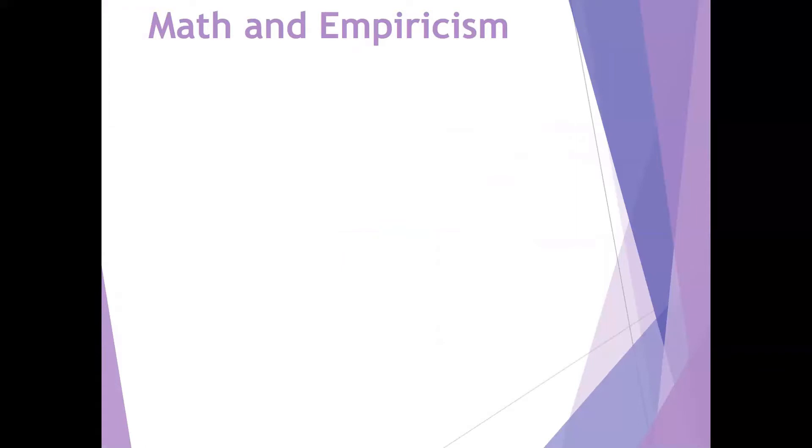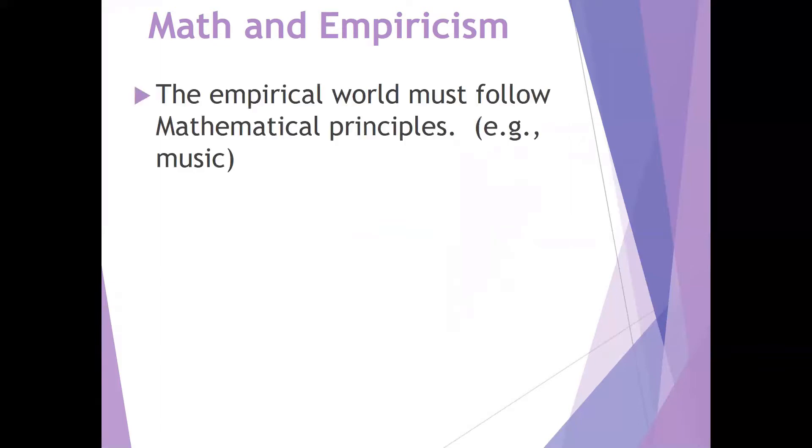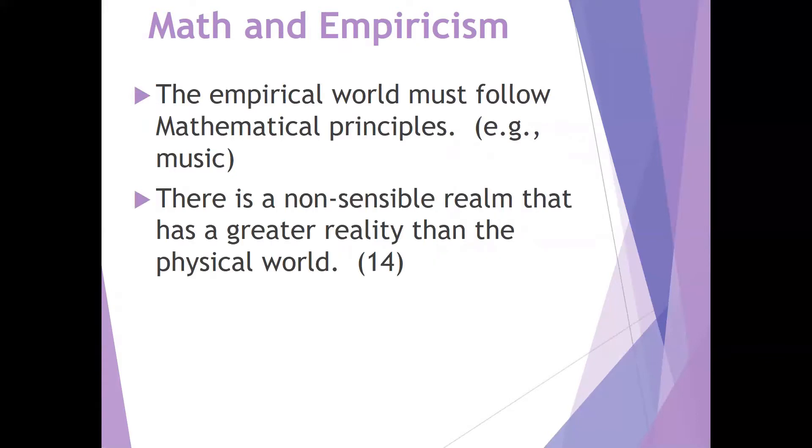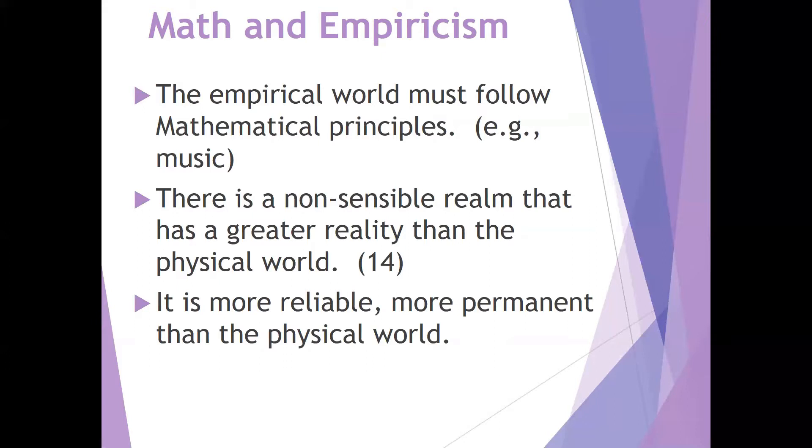So there's this correlation then between mathematics and the empirical world. The empirical world, that which we sense, the physical matter that we are familiar with, has to follow these mathematical principles. So that's not only true with things like triangles and other geometric objects, it's true with music. So there is this nonsensible realm, this distinct realm of necessary truths that has a greater reality than the physical world itself. And this realm is more reliable, trustworthy, more knowable, more permanent than the physical world.